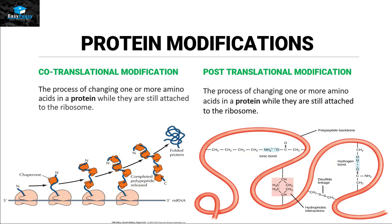Protein modifications can be of two different types. One is called co-translational modification, and one is called post-translational modification. The difference between the two is: if the process of modification or changing of one or more amino acids in a protein starts while they are still attached to the ribosome, that is called co-translational modification.